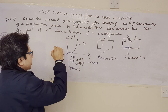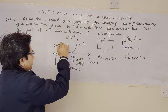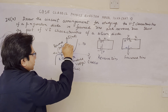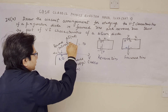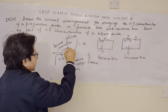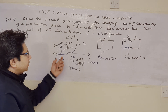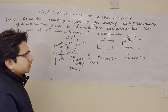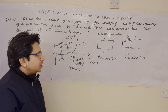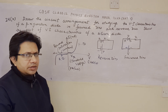The reverse saturation current is present in the reverse bias condition in a practical diode. So these three diagrams will be made.